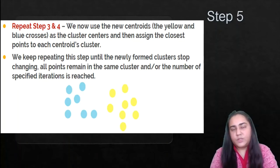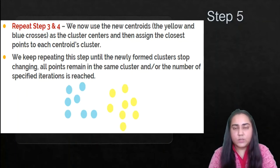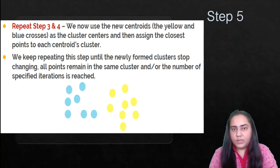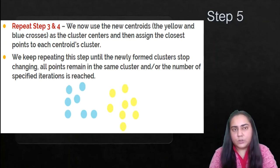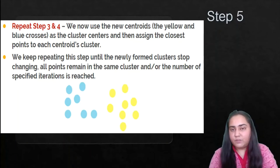It's not always possible to reach convergence, so sometimes the results after a certain number of iterations are the results we stop at. The clustering algorithm can stop either when it reaches convergence — meaning no points are switching clusters anymore — or when a specified number of iterations is reached. For example, you could set the algorithm to run for 500 iterations and stop after that.